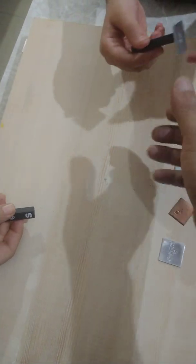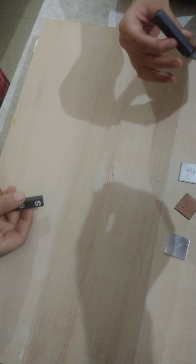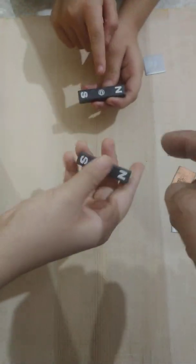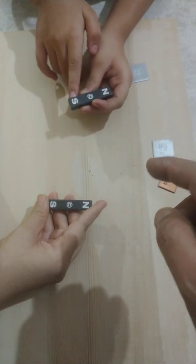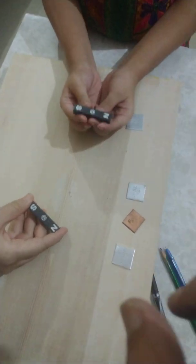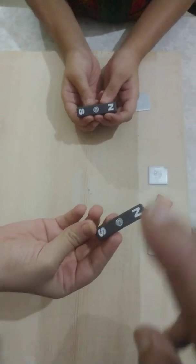Now, what is that N and that S on the magnet? The N means North Pole and the S means South Pole. Oh, that means a magnet has two poles. A North Pole and a South Pole.